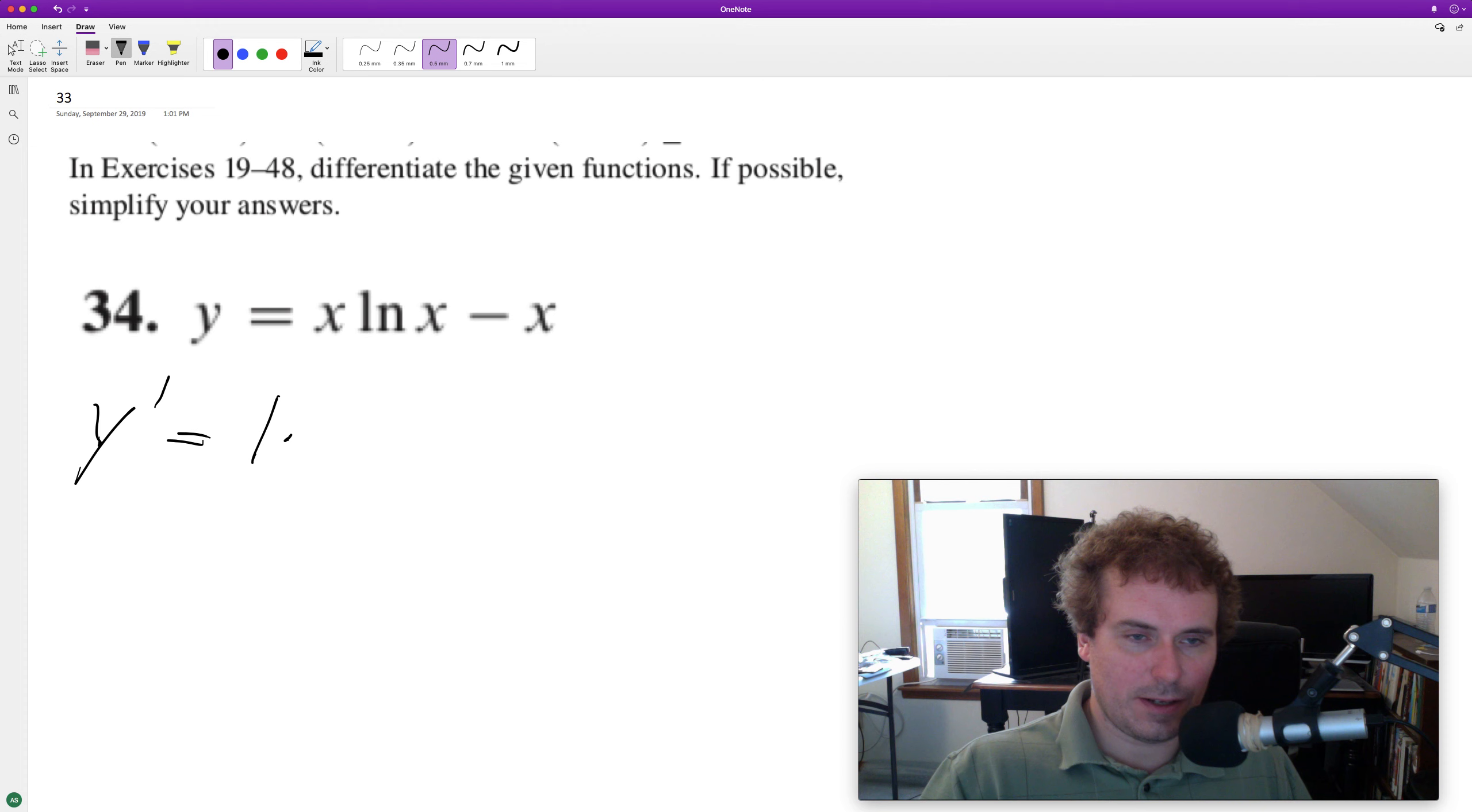The derivative of x is just one times natural log of x, plus x times the derivative of natural log of x, which is one over x, and then minus x is just one.